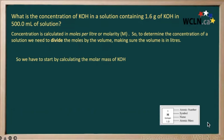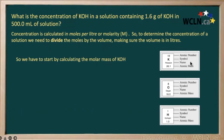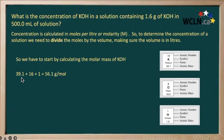Let's look at our elements. We have potassium, we have oxygen, and we have hydrogen. We need to calculate the molar mass — the mass for one mole of potassium hydroxide. Adding up the atomic masses for one potassium, one oxygen, and one hydrogen, we get 56.1 grams per mole.